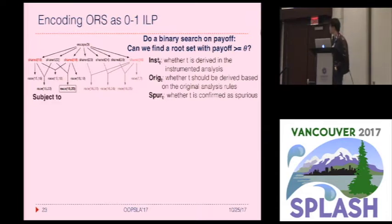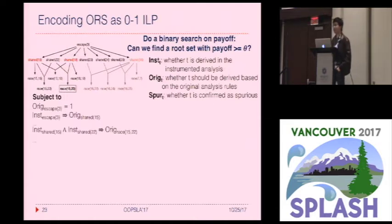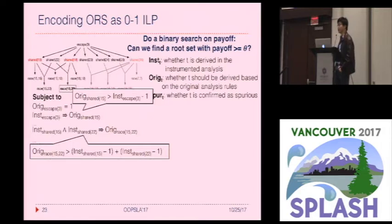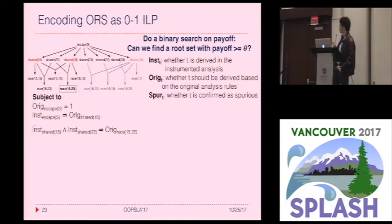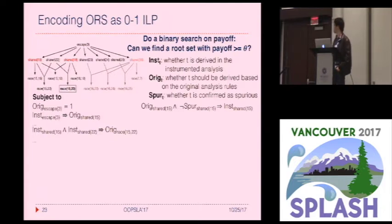Let's look at the constraints. First, we encode assignments to the RIG variable. We assign RIG to one if the tuple T is an input tuple or is the head tuple of any rule instance whose body tuples are all derived by the instrumented analysis. I'm using Boolean constraints for readability, but these straightforwardly convert to linear constraints. We next write constraints for assignments to the INS variable: for any tuple, if it should be derived based on the original rules and is not marked spurious by the user, we derive it in the instrumented analysis.